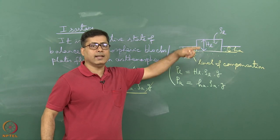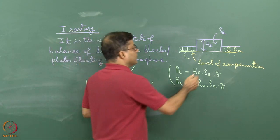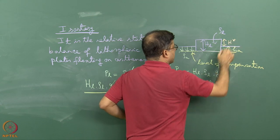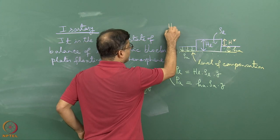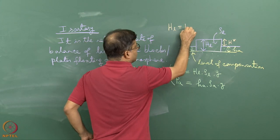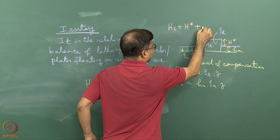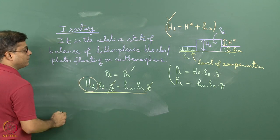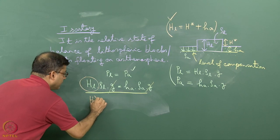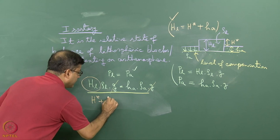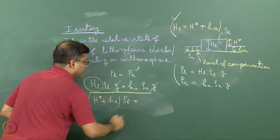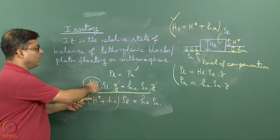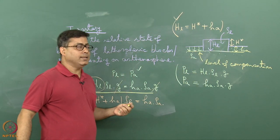In certain textbooks you can find another way of writing this expression. Imagine this height above the fluid surface is H*. From the diagram, H_L = H* + h_A. Substituting, we get (H* + h_A) × rho_L = h_A × rho_A. This is just another form of the same equation by introducing the H* term, from which h_A can be expressed by algebra.